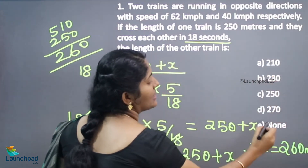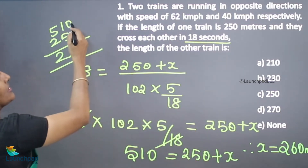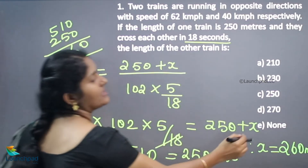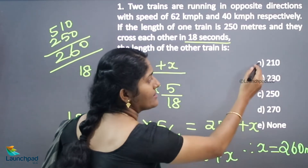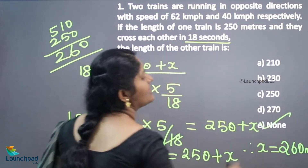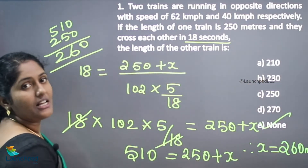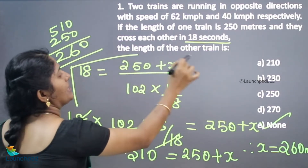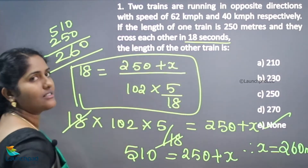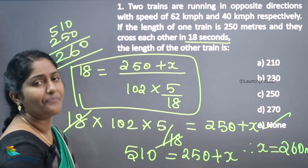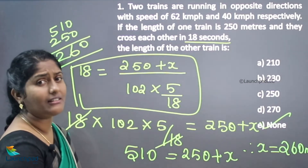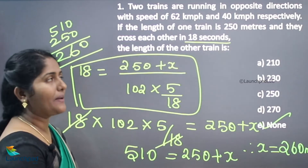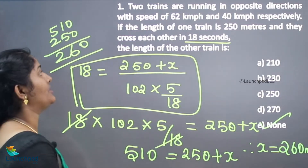Looking at the answer choices, 260 meters does not match any option — so the answer is none of these. The concepts are the same here, but the missing data is the second train's length, and we calculated it accordingly. We will move on to the next question.